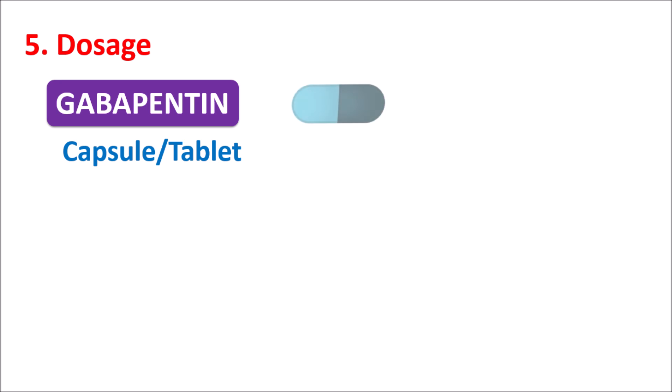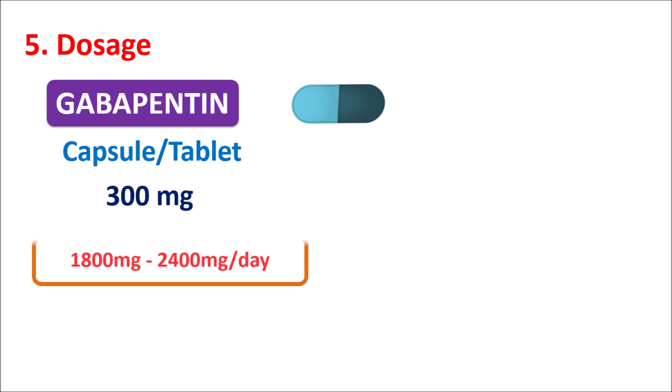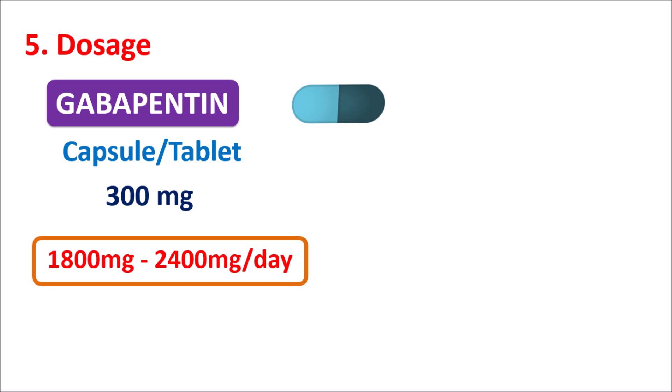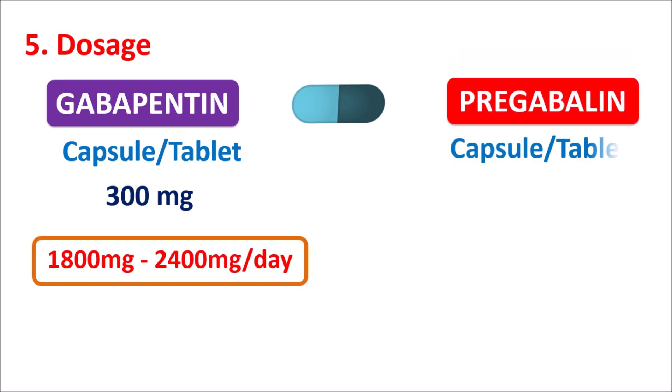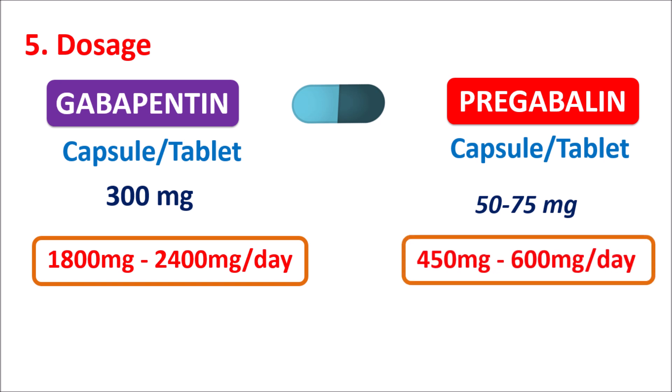The fifth point is doses. Gabapentin is available as a capsule and tablet. It can be started initially at 300 mg per day, with a maximum dose variable from 1800 mg to 2400 mg per day, given in divided doses three times a day. Pregabalin is also available as a capsule or tablet. The initial dose is variable from 50 to 75 mg based on the clinical indication, and the maximum dose is variable from 450 mg to 600 mg per day. The dose of Pregabalin is notably less because it is more potent, while Gabapentin requires a higher dose partly due to its lower absorption.